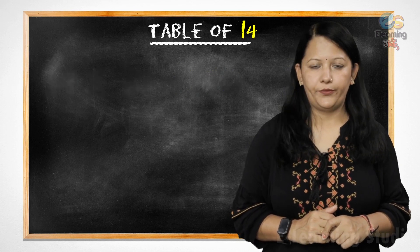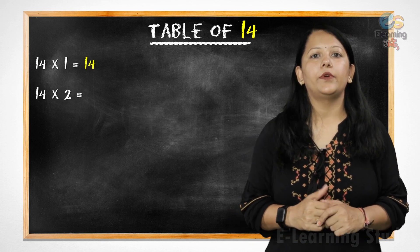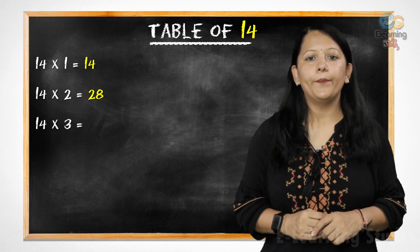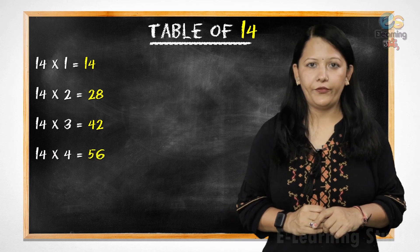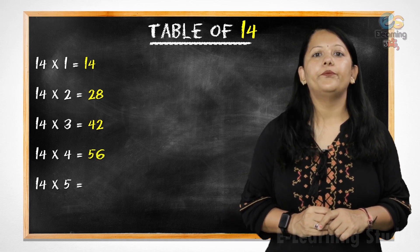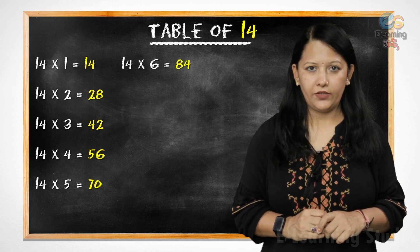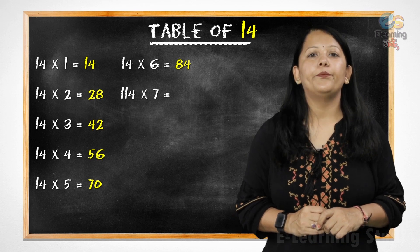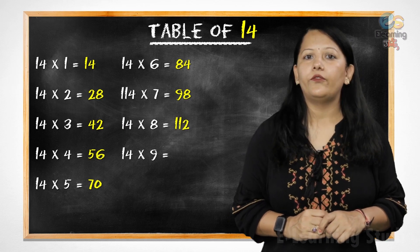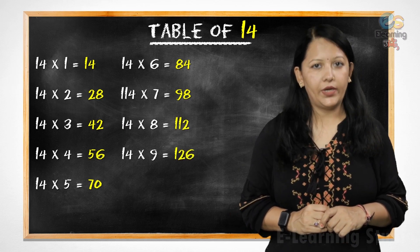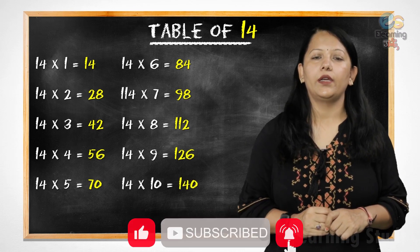Now, let's revise it. 14 ones are 14. 14 twos are 28. 14 threes are 42. 14 fours are 56. 14 fives are 70. 14 sixes are 84. 14 sevens are 98. 14 eights are 112. 14 nines are 126. 14 tens are 140. Very good.